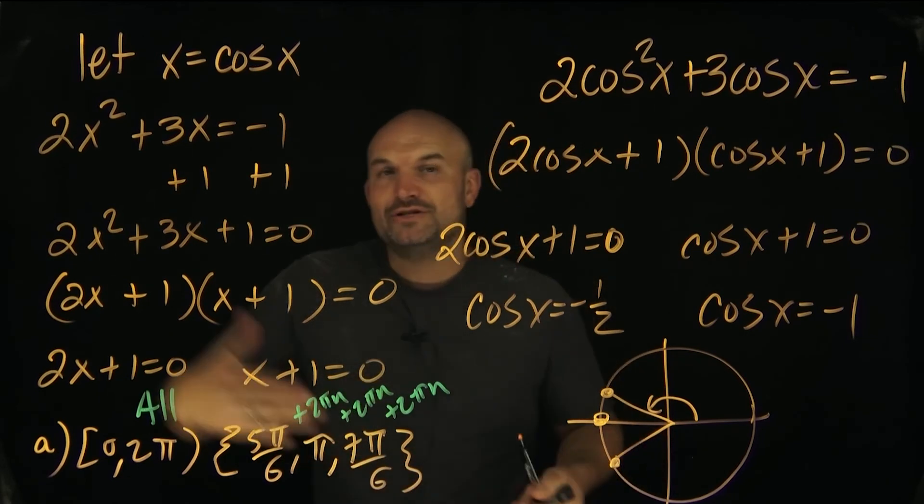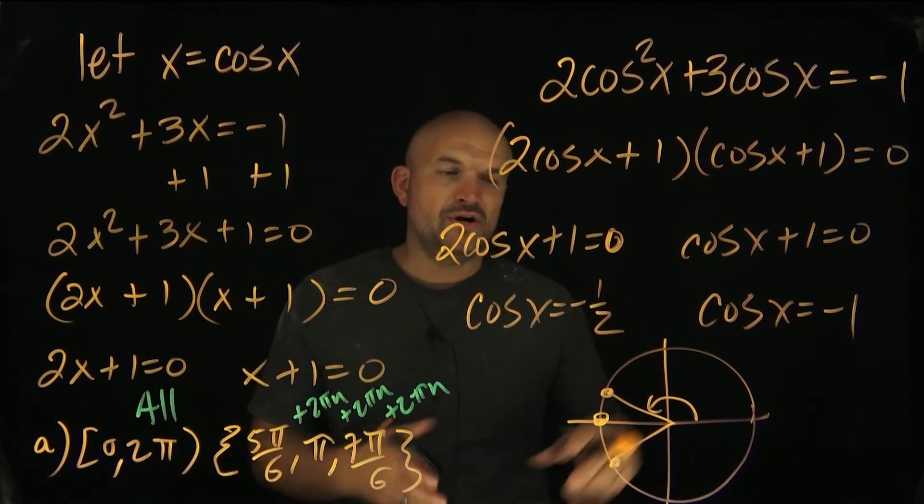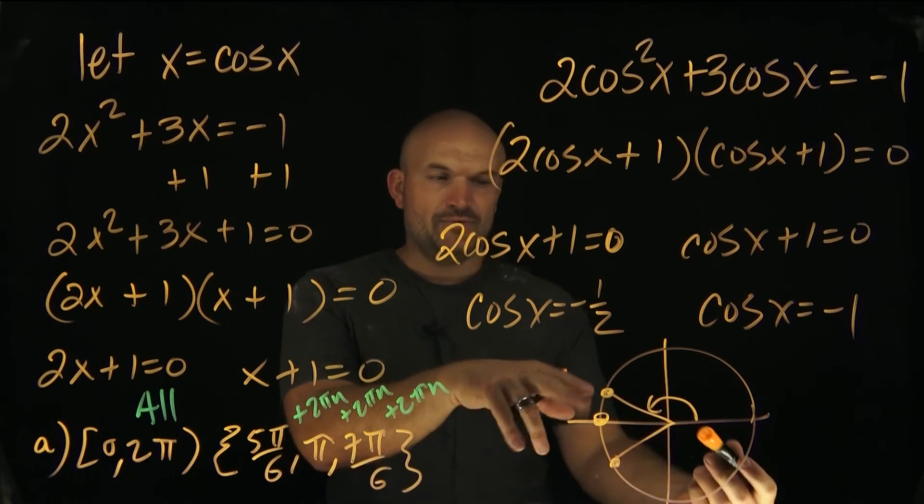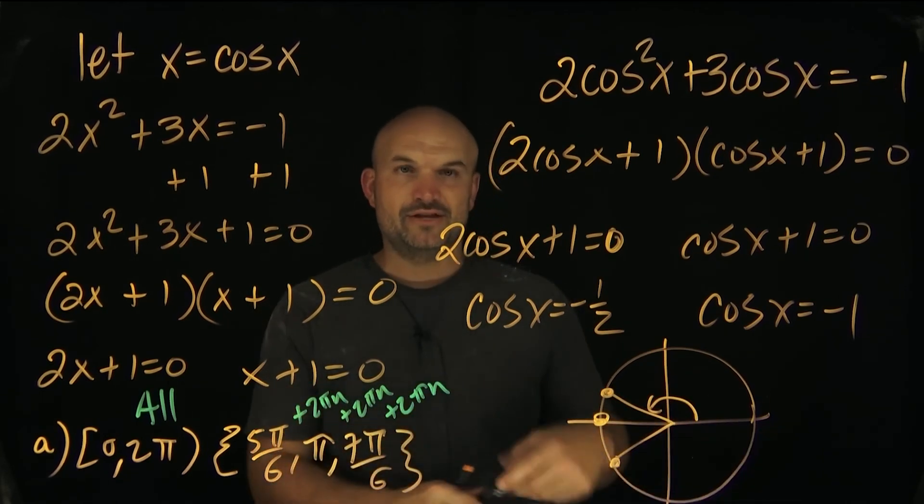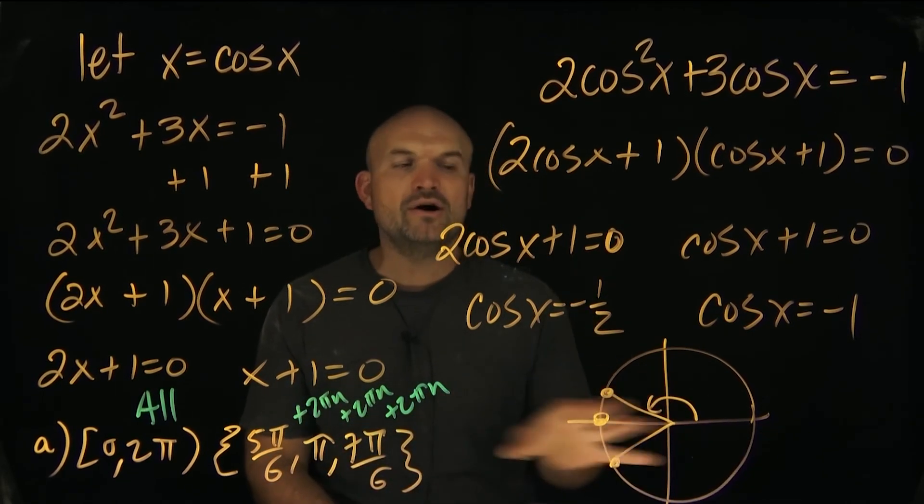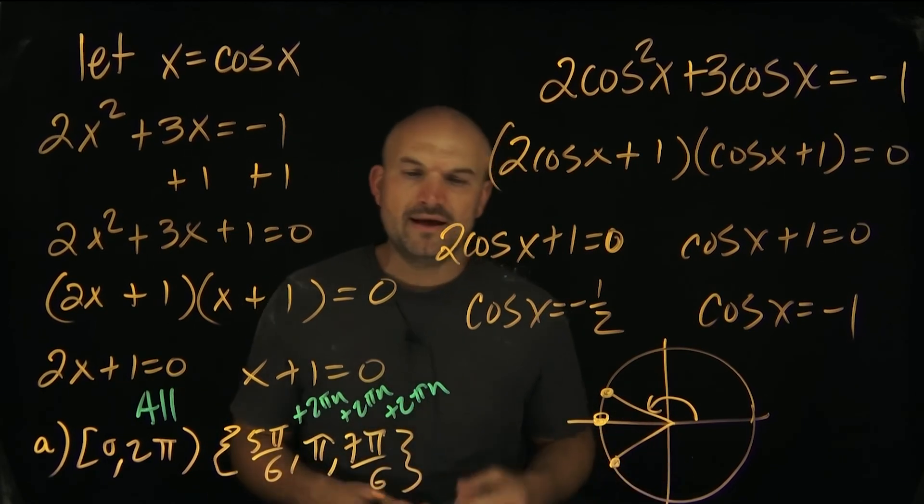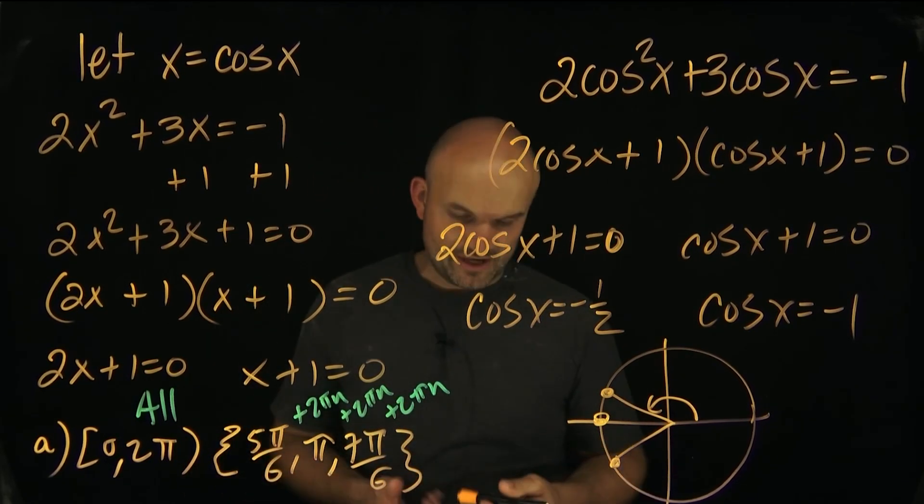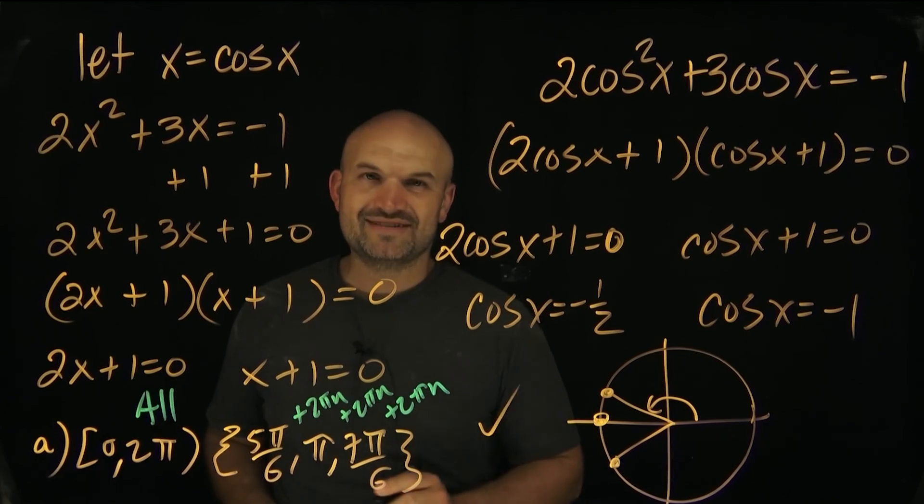The one caveat, though, is a lot of times when they're only like pi away or something like that, you can sometimes simplify that. So you always want to look for a more simplified solution, just add your 2 pi n. So hopefully this video was helpful for you guys, and if it was, I know you're going to enjoy the next video.